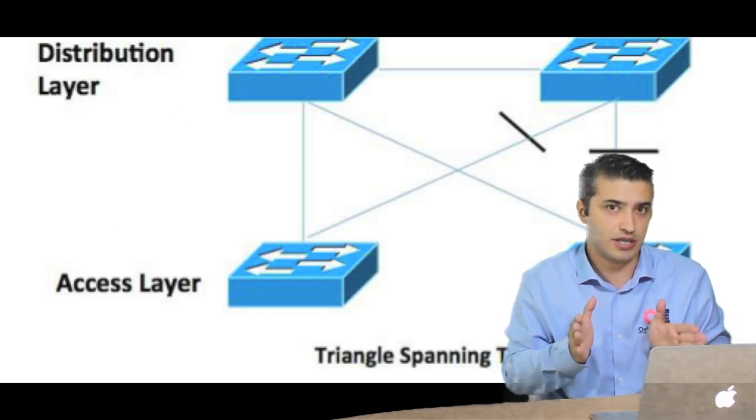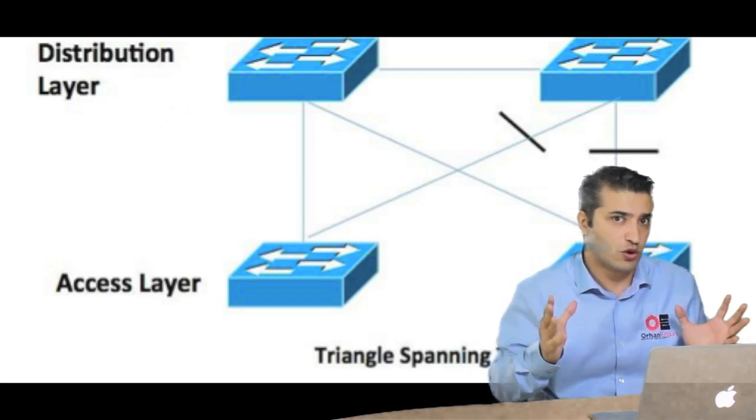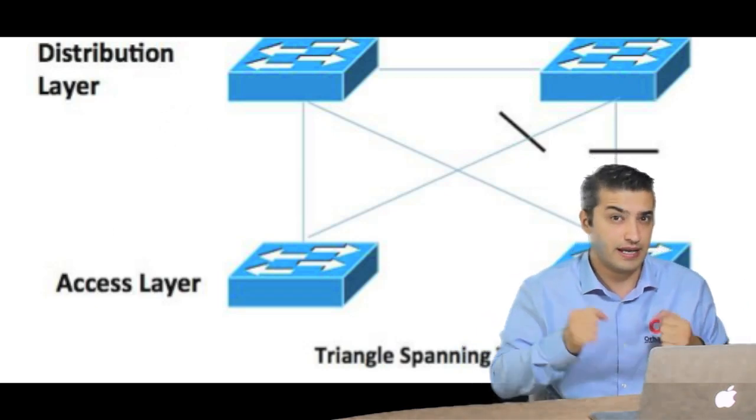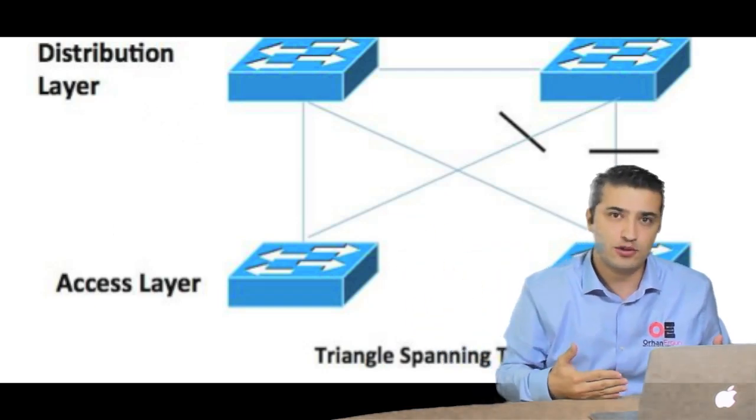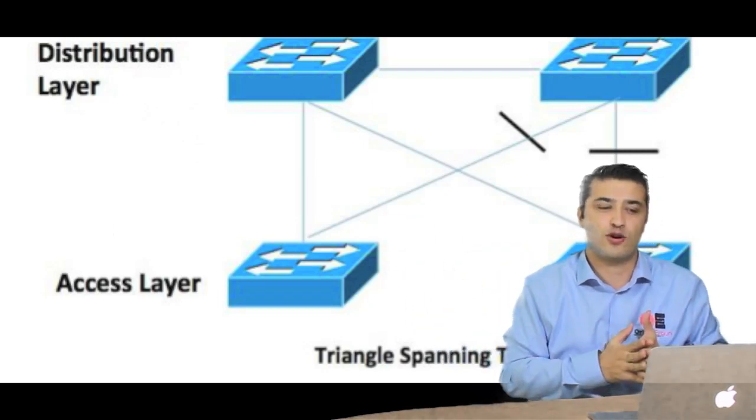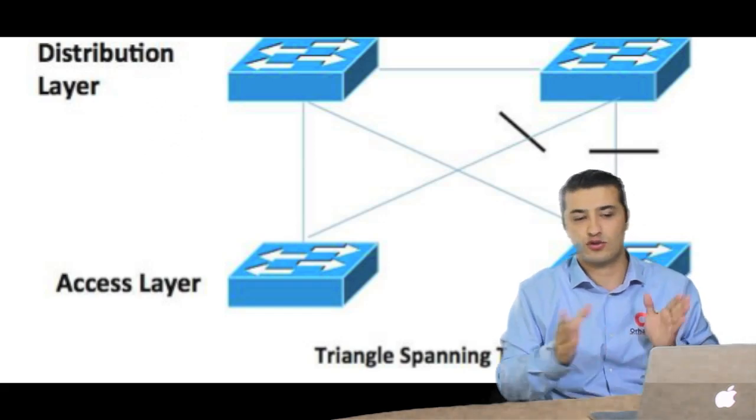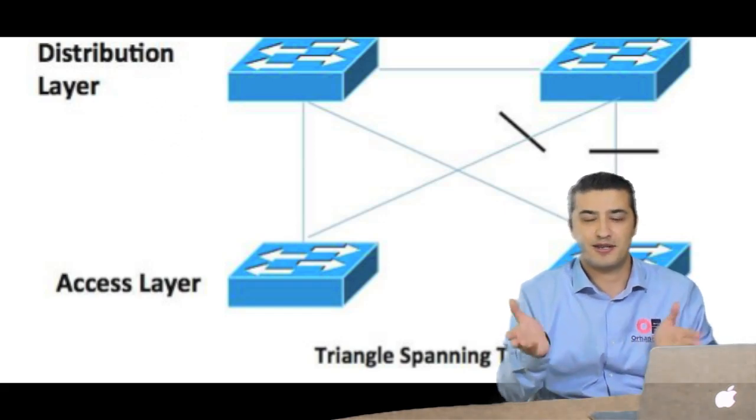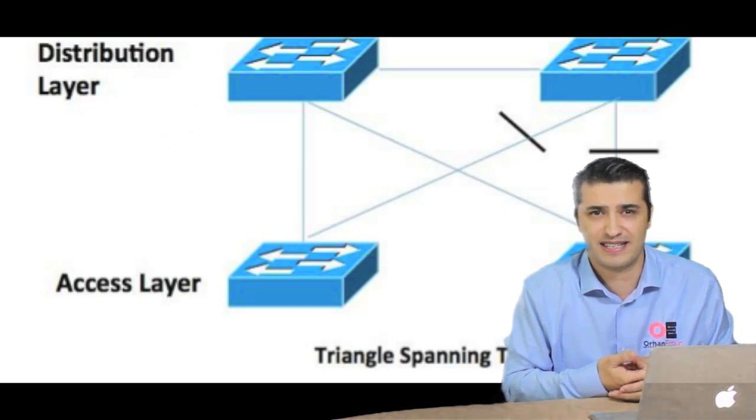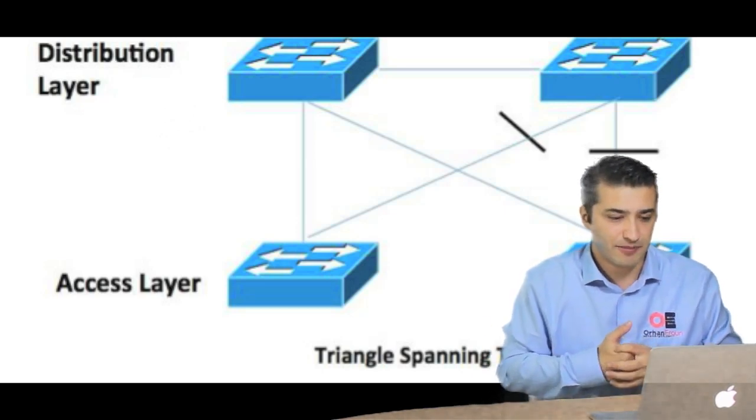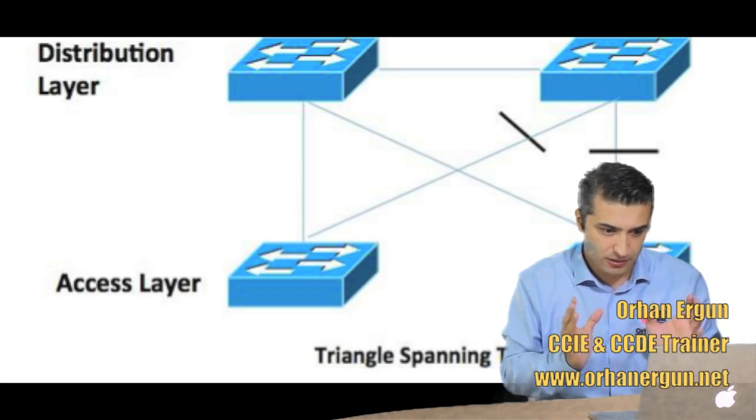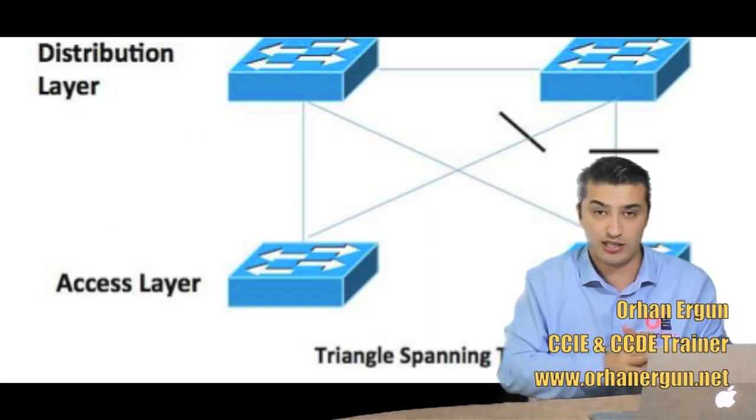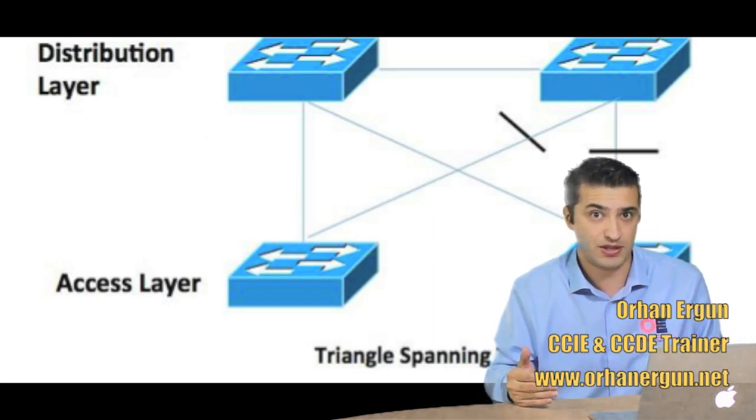Spanning tree actually blocks those loops, eliminate, avoid those loops by blocking the links. This is not good, but we can also somehow use those links if we do VLAN-based load balancing. This is another video's topic. But in order to basically eliminate a loop here in this topology, in layer 2 topologies, spanning tree is used.